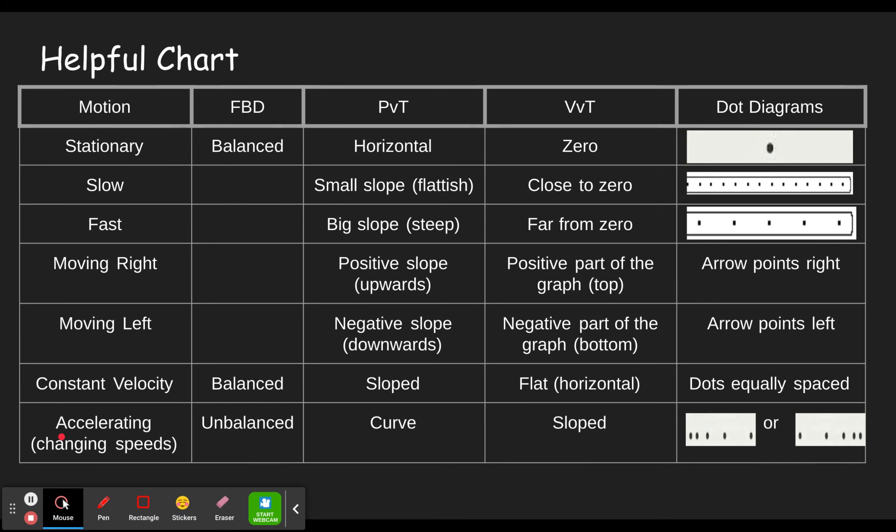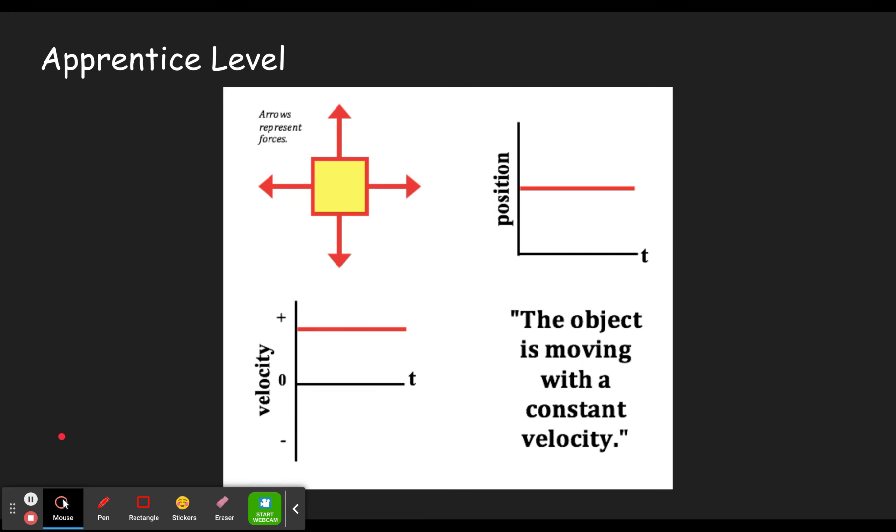So we're just going to go through three examples, one from each level and talk through how you would go about thinking about this. Okay. So first you see that we've got in the apprentice level, we've got, I think everyone has a position time graph, a velocity time graph, a description in words, and the new thing, our free body diagram.